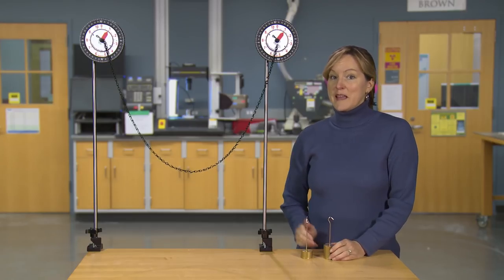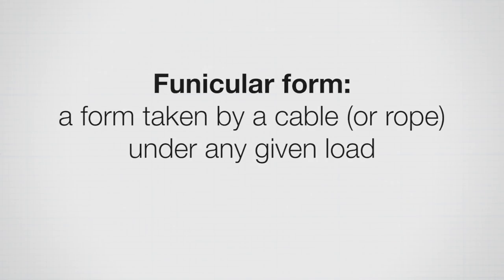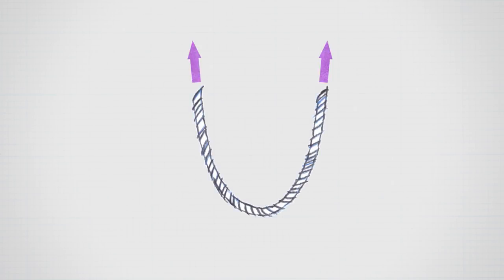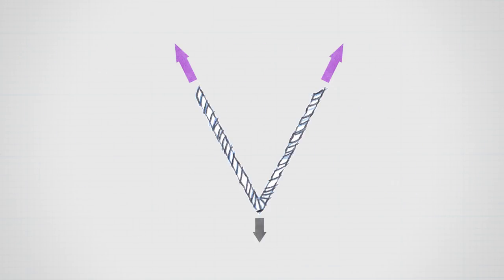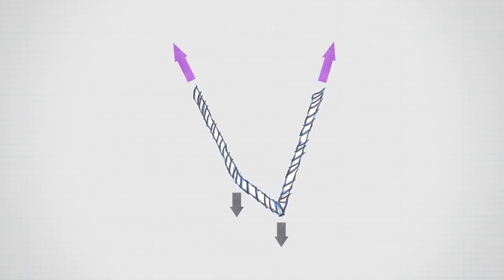So what is a funicular form again? It's the form taken by a cable or a rope under any given load. A cable with no load, like this one, is a catenary, but it's also the funicular form for no loads. The V-shape with the load in the middle that we had is the funicular form for a single load, and any different loading condition you put on there will give you a funicular form.